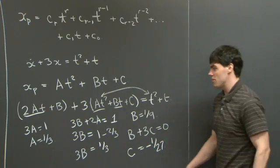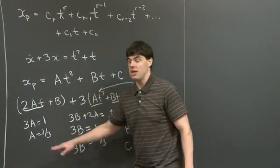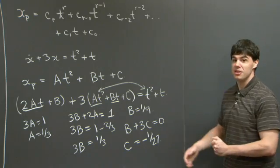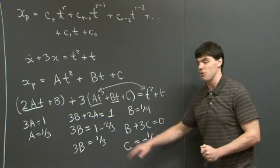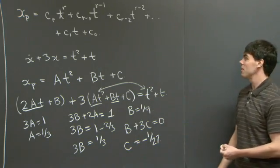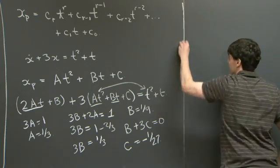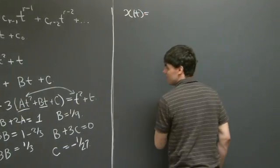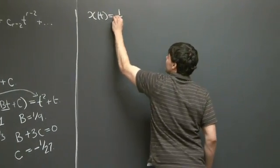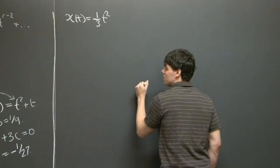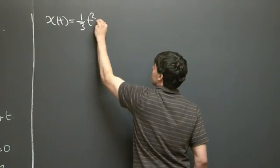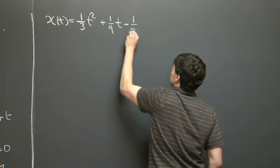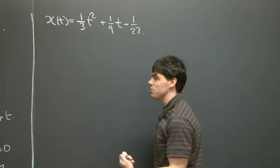Notice how we always start with the highest power — a is the coefficient in front of t squared — and then the rest of the undetermined coefficients can be solved almost like a giant zipper. The particular solution for part A is: (1/3)t squared + (1/9)t − 1/27.